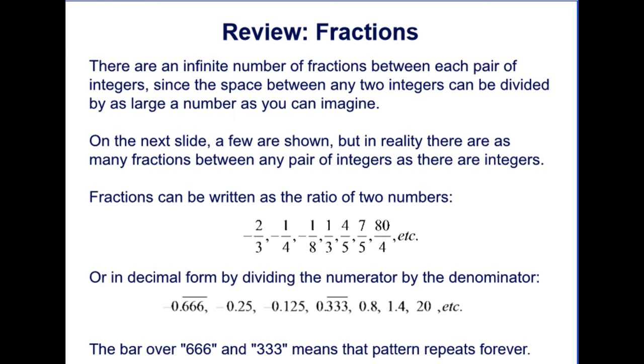Fractions can be written as the ratio of two numbers. So instead of thinking of it as a division, you can think of it also as a ratio, such as negative 2 over 3, negative 1 over 4, negative 1 over 8, 1 third, 4 over 5, 7 over 5, 80 over 4. You can go on and on.